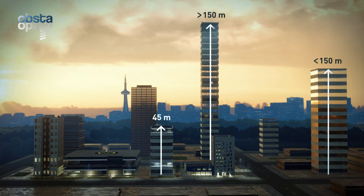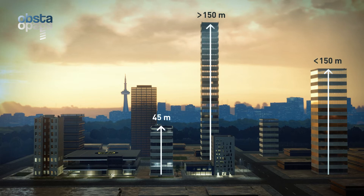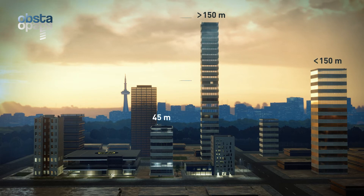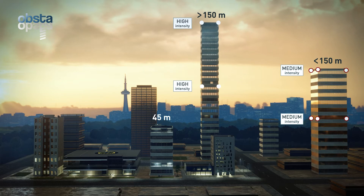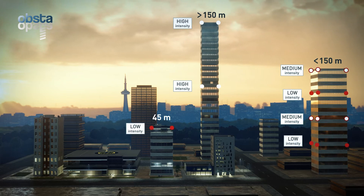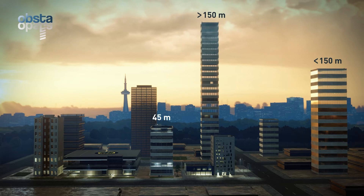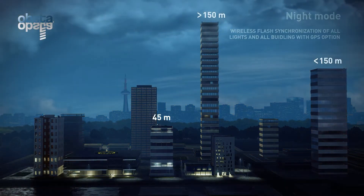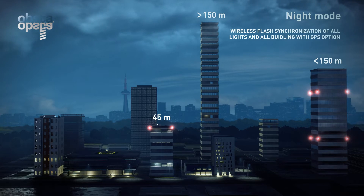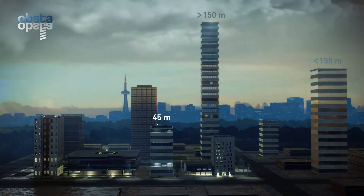Three types of lights are detailed by ICAO: high intensity, medium intensity, and low intensity. There are three typical combinations depending on elevation and the associated risk: below 45 meters, between 45 meters and 150 meters, and above 150 meters.